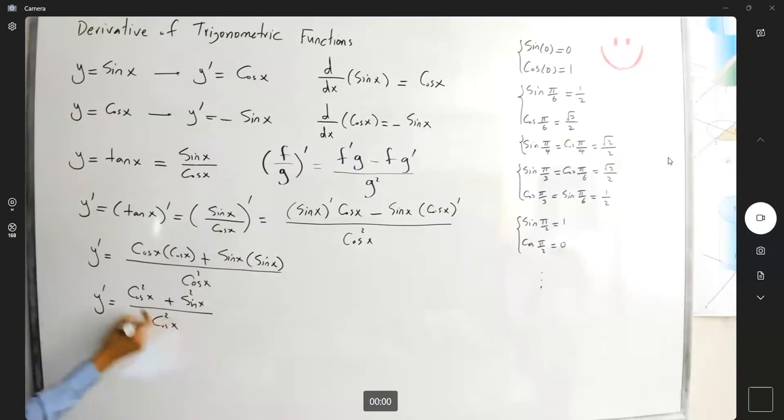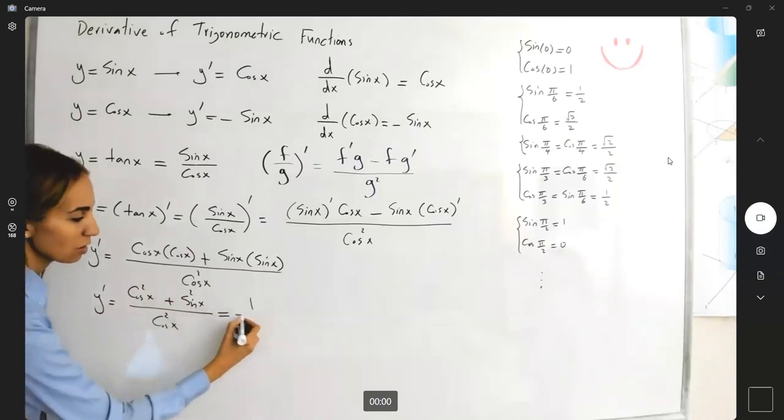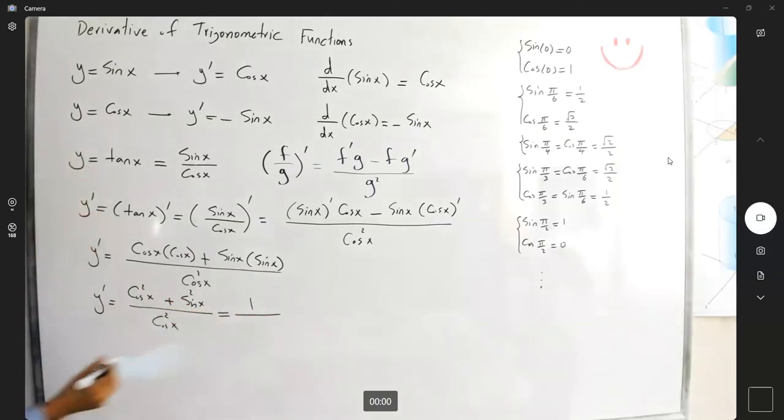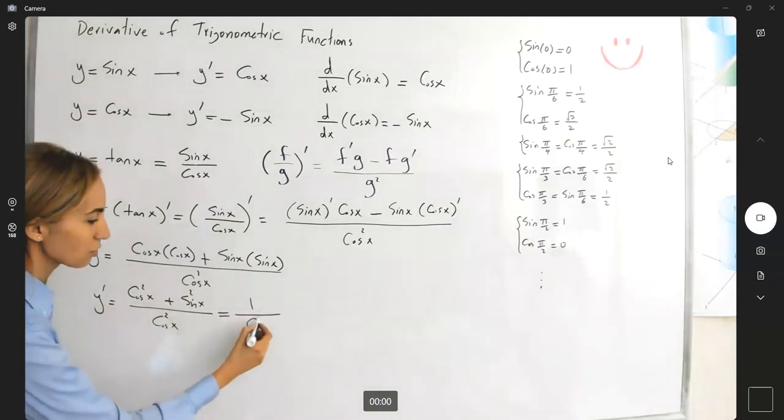Guys, don't cancel out cosine and cosine. They're connected together by addition. You are not allowed to cancel them out. First, you have to simplify your numerator. But this is just a trig identity. Sine squared plus cosine squared is always 1, so we have 1 divided by cosine squared of x.